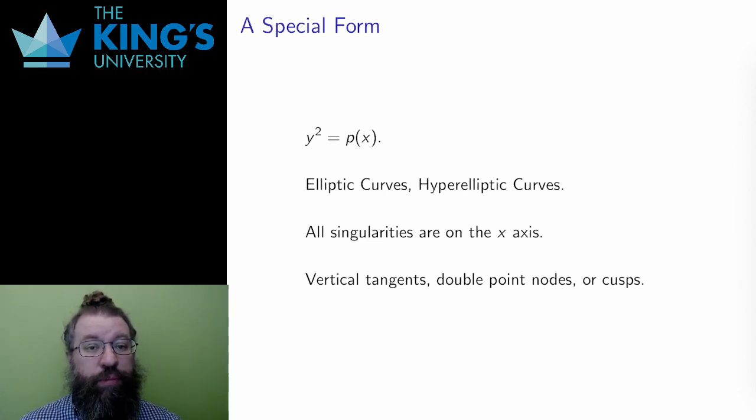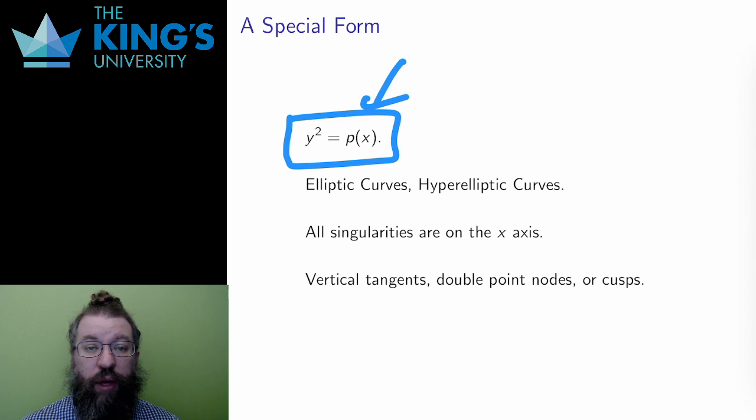I'm going to do this for a special form of algebraic plane curves, the form y squared equals p of x, where p is a polynomial only in x and of degree at least 2. The degree of p, since it is at least the same as the degree of y squared, will determine the degree of the curve.